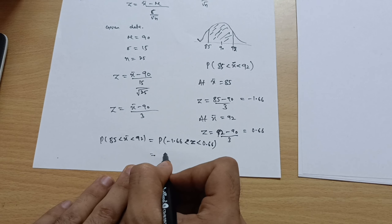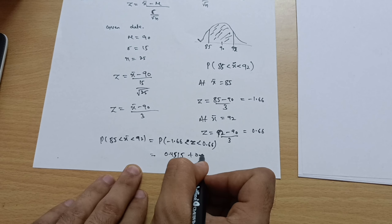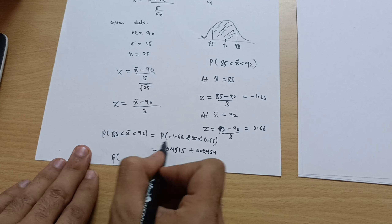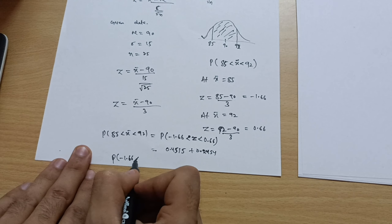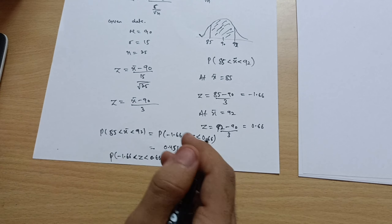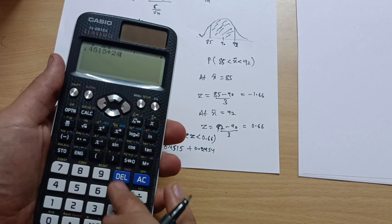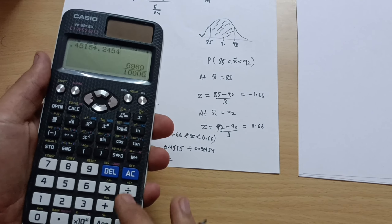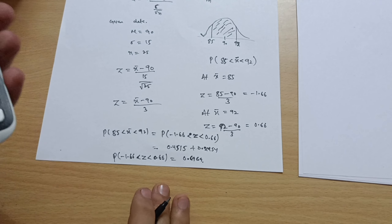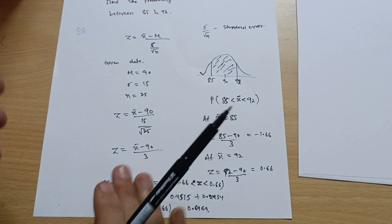Therefore, P(−1.66 < z < 0.66) = 0.4515 + 0.2454 = 0.6969. This is the probability that the sample mean is between 85 and 92.